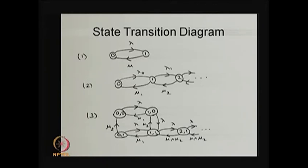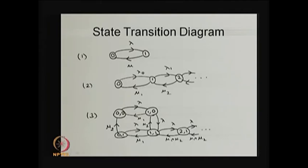The third example is also a continuous time Markov chain — it is a two-dimensional Markov chain with state labels (0,0), (1,0), (2,0), and so on. The key difference between a discrete time Markov chain state transition diagram and a continuous time Markov chain state transition diagram is: there is no self-loop, and the labels are the parameters of the exponential distribution, whereas in a discrete time Markov chain the labels are the one-step transition probabilities. Here, the arrow labels give the parameter of the exponential sojourn time in each state.